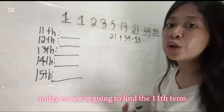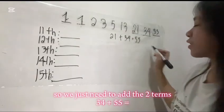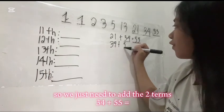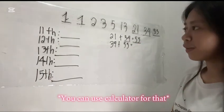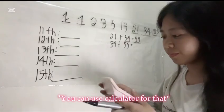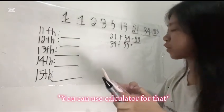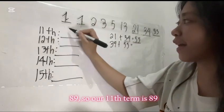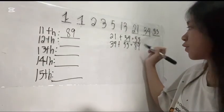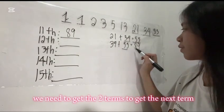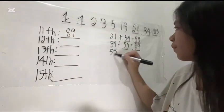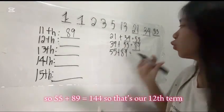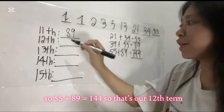Now we're going to find the 11th term. We just need to add the two terms. 34 plus 55 equals... I will be using my calculator for this. You can also use your calculator to solve this. 89. So, our 11th term is 89. You need to get the two terms to get the next term. 55 plus 89 equals 144. That's our 12th term.